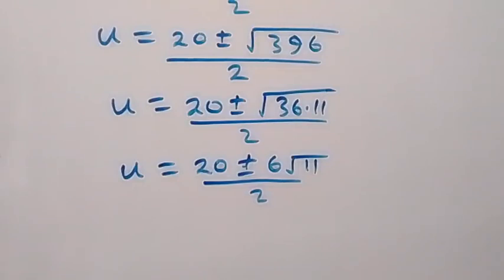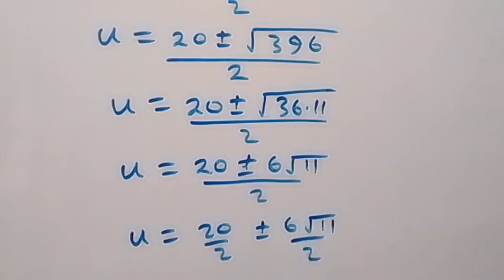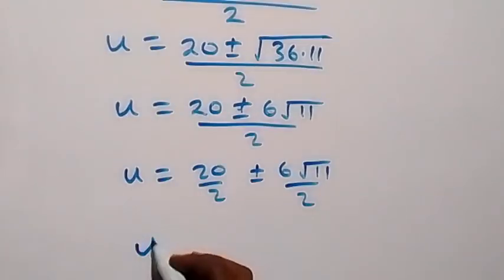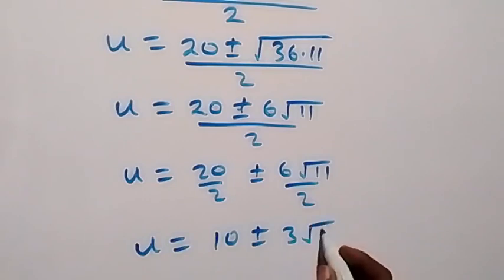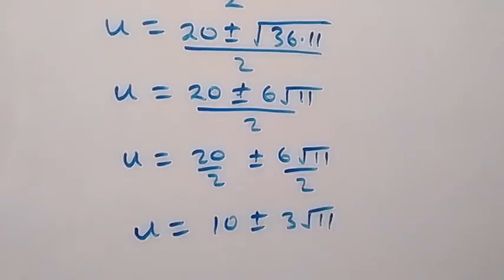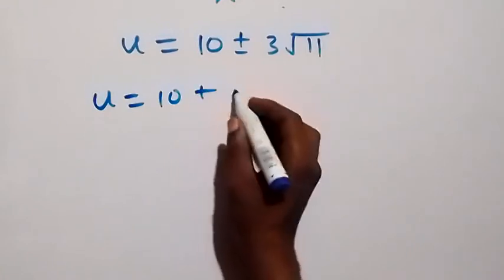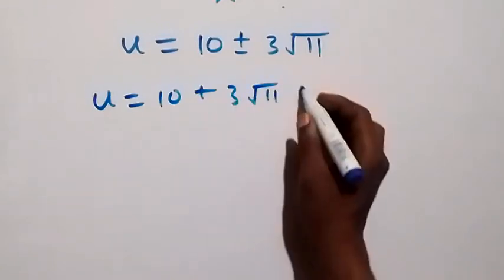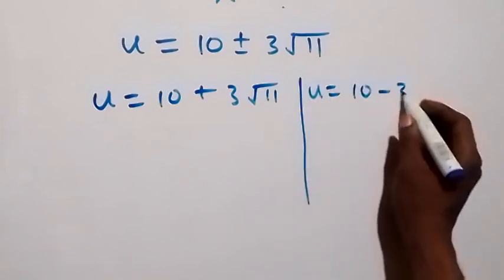We can separate this as u equals 20 over 2, plus or minus 6 root 11 over 2, and this becomes u equals 10 plus or minus 3 root 11. So we have two possible cases of u: the first is u equals 10 plus 3 root 11, and the second is u equals 10 minus 3 root 11.